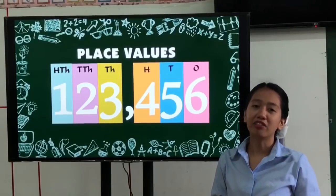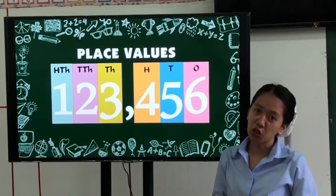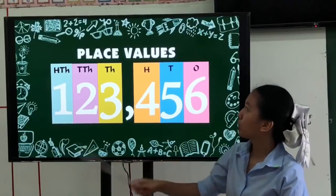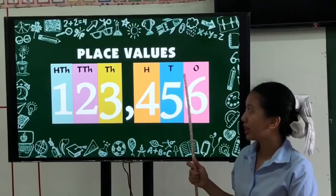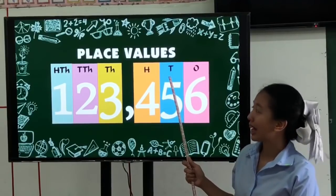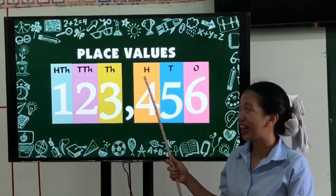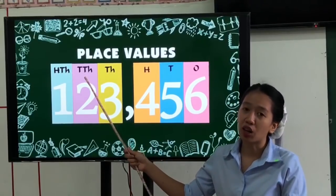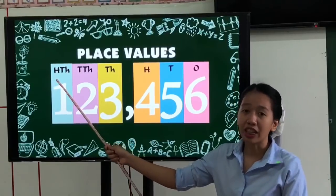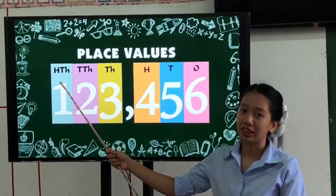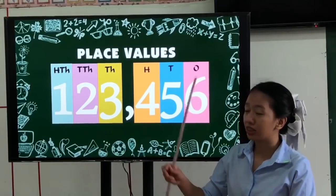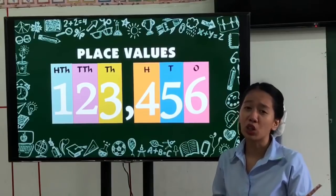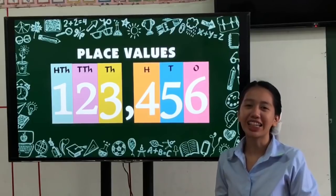For our summary of this lesson: place value — when we read place value, we start from right to left. O stands for ones, T stands for tens. And when we write in words, we start from our left to right. That's it for our lesson for this video. Hope you enjoy and learn something. Goodbye and see you next time.